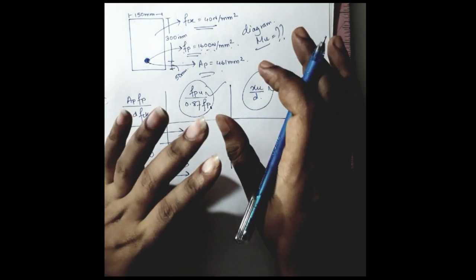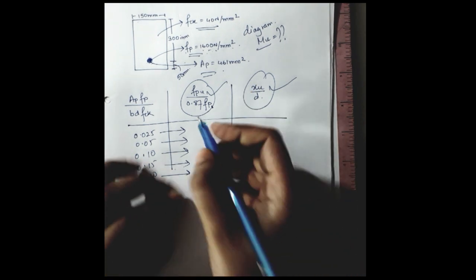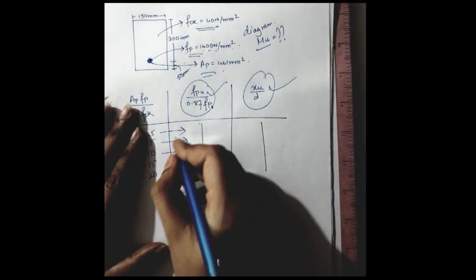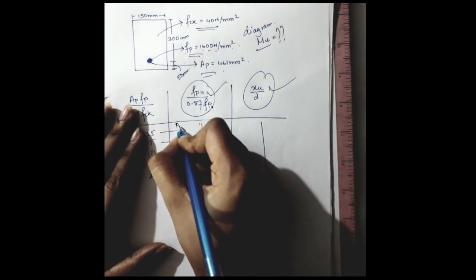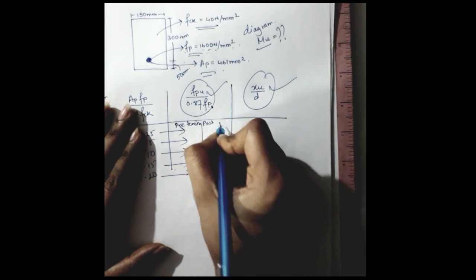And here the values are also segregated in two divisions, where this is for pre-tension and this is for post-tension.